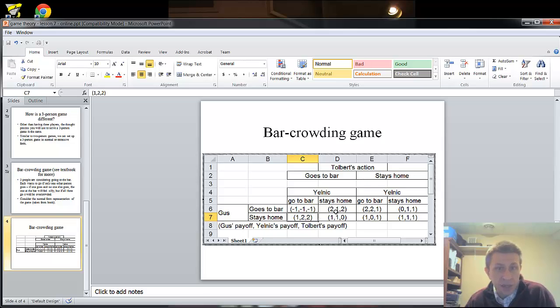Up here, Gus is at the bar with Tolbert. Jelnick is staying home. So it's two for Gus, one for Jelnick, two for Tolbert. And over here is the other where two are at the bar. If one person alone goes to the bar, that person gets a payoff of zero. You'll see there's three spots where there's a payoff of zero. That's where a person is at the bar by him or herself.